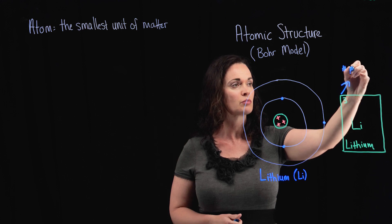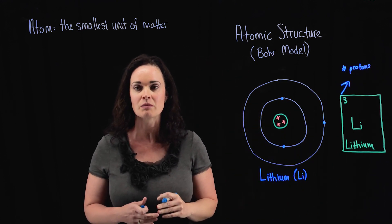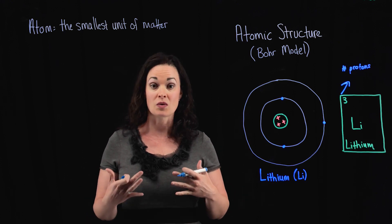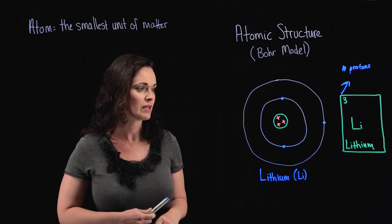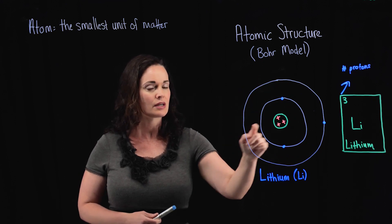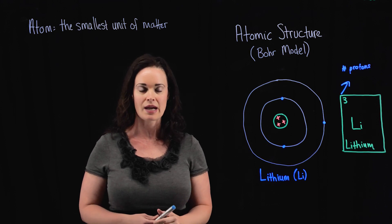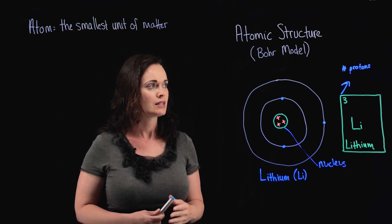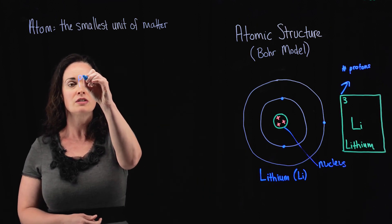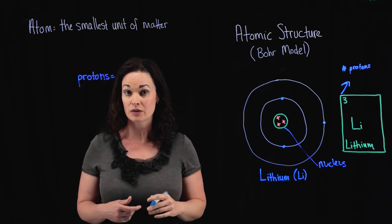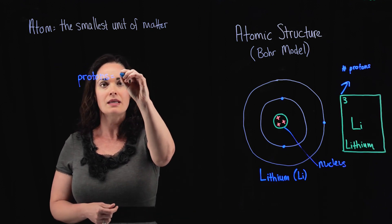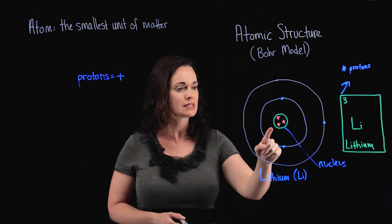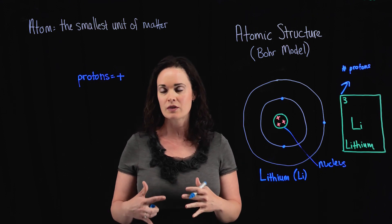The atomic number is the number of protons in the nucleus of the atom. If you're just starting out with basic chemistry, you're probably wondering: what's the nucleus, and what are protons? Here's a representation of lithium — we have this dense central core, which is known as the nucleus. Inside the nucleus we have particles known as protons. Protons are always found in the nucleus, and they are positively charged. With an atomic number of three, lithium has one, two, three protons within the nucleus, each with a positive charge.